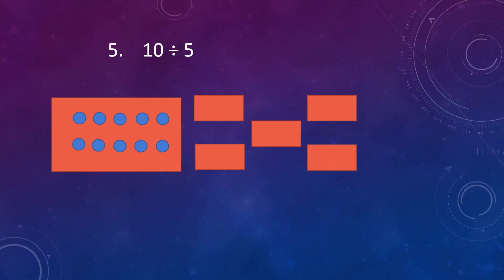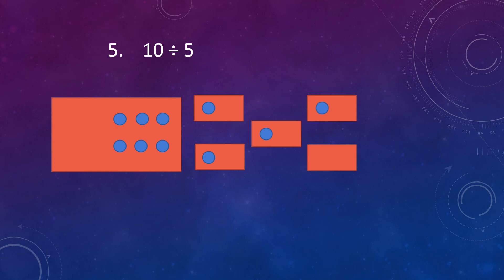Our fifth example is 10 divided by 5. Here 10 dots are given and we have to divide them equally between 5 boxes. So, put the first dot and keep it in the first box, take the second dot and keep it in the second box, take the third dot and keep it in the third box, take the fourth dot and keep it in the fourth box, take the fifth dot and keep it in the fifth box. Put the dots equally in each box.